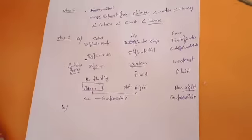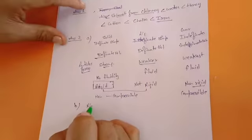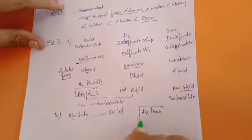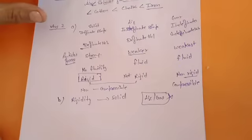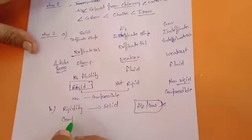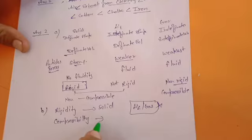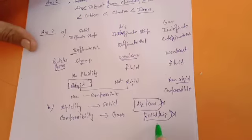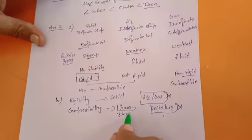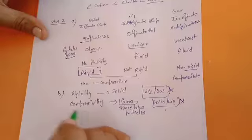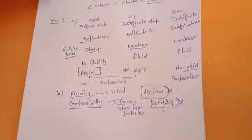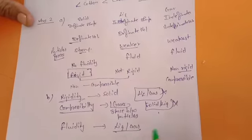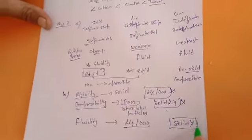Now part B asks about different terminology. Rigidity is associated with solids — liquids and gases are not considered rigid because their attraction forces are weak compared to solids. The same applies to compressibility: it is only possible for gases, because solids and liquids do not show compressibility. Gases are compressible because there is large space between their particles. Next, fluidity: liquids and gases can flow while solids cannot, because of their attraction forces.